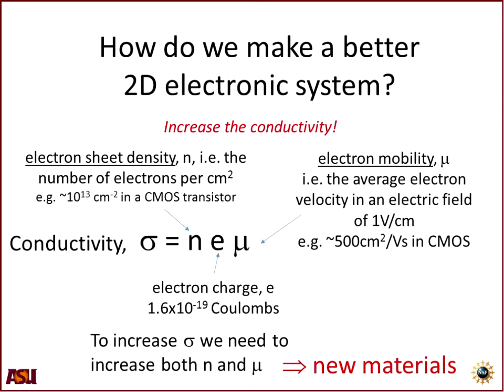This is the only equation I'm going to show. It relates the conductivity, sigma, to the product of N — the electron sheet density — E, the electronic charge, and mu, the electron mobility. In our CMOS transistor, the electron sheet density is 10 to the 13 per square centimeter, reflecting the number of atoms in each square centimeter of silicon surface. The electronic charge E is a constant in nature: 1.6 times 10 to the minus 19 coulombs — the charge carried by one electron.